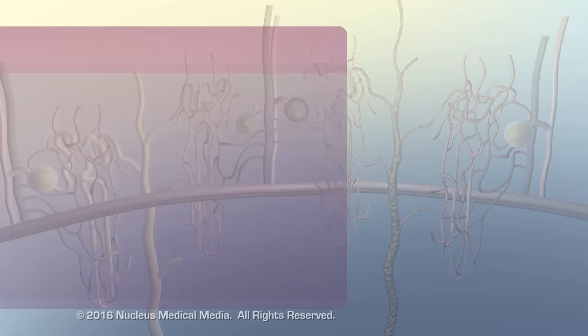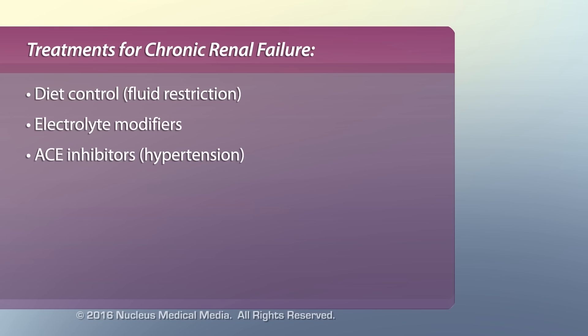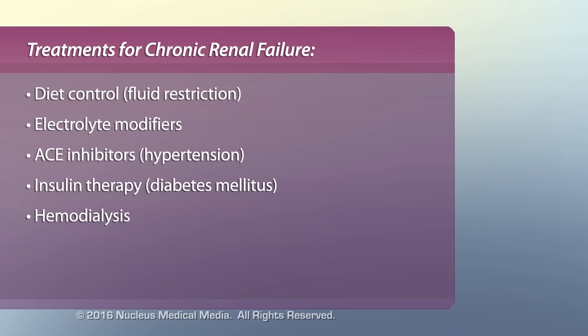Treatments include dietary control including fluid restrictions, medication for the underlying condition, and electrolyte modifiers. ACE inhibitors for hypertension and insulin therapy or hemodialysis can reduce chronic renal failure. End-stage renal failure usually requires dialysis and kidney transplantation.